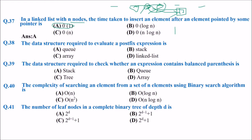Next: the data structure required to evaluate a postfix expression. The answer is of course a stack. Whenever there is a variable or value, you place it on the stack — say A, then B — and when an operator appears, you pop elements out and perform the operation. This is how a stack works for postfix expression evaluation.